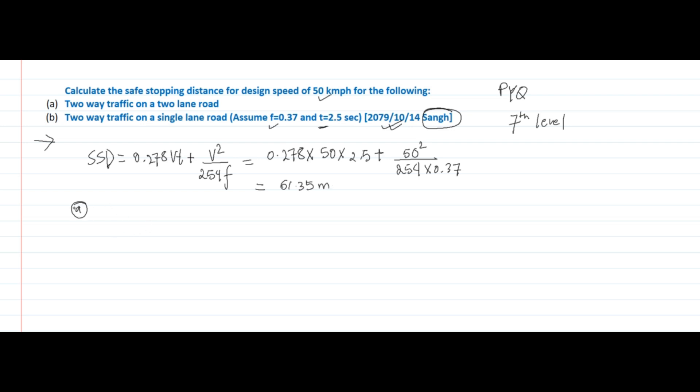Two-way traffic on a two-lane road. If the traffic is two-way and the road is two-lane, then the safe stopping distance equals to SSD itself. So the answer is 61.35 meters.